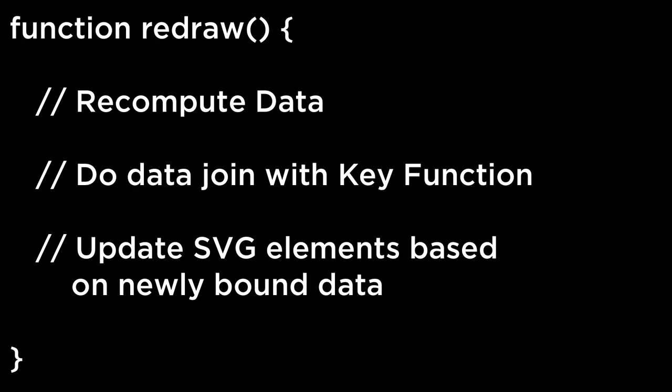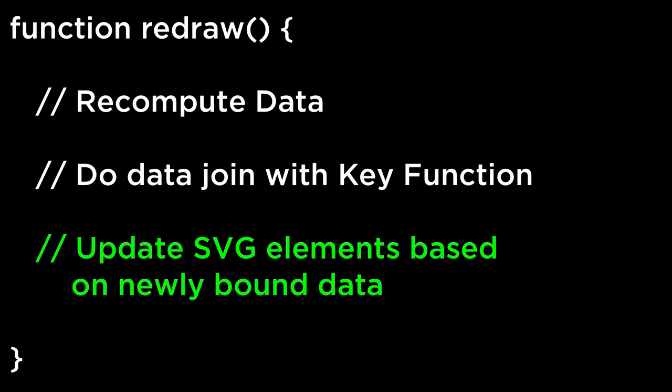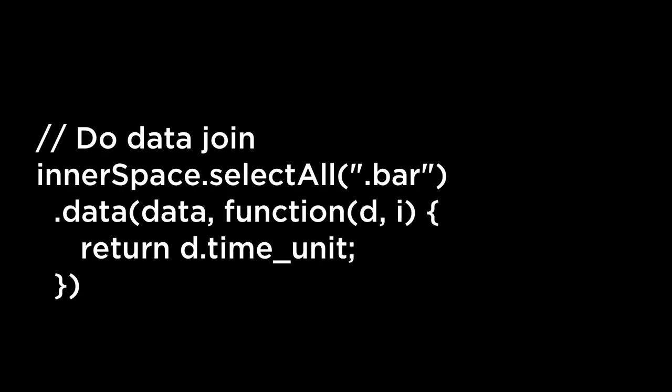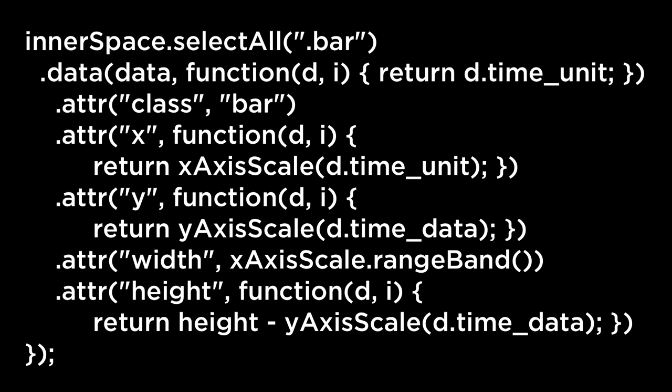The way we do this is with a JavaScript function called redraw. Within this function, we will recompute the data by calling the updateData function — the array of JSON objects returned is the new data for the data join. The data join is done using a key function to make sure the minute bar gets the minute data and the second bar gets the second data. Because we have the same number of existing elements and data elements, we don't have to worry about enter and exit selections — we just update the attributes of elements already there, using the same functionality that created the bar chart.